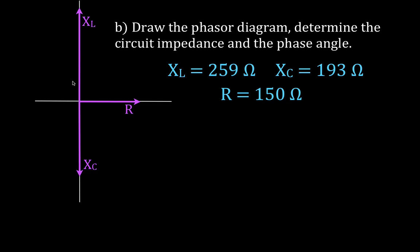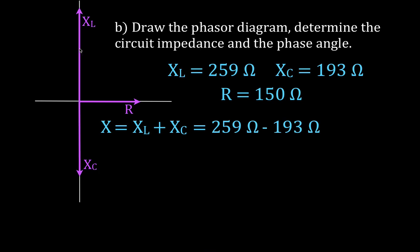To combine the y-axis vectors, we take the difference: XL plus XC, where XL is 259 and XC is negative 193, giving a net reactance X of positive 66 ohms. This positive result means the circuit is more inductive. I represent that combined vector separately, then add it to the resistance vector to get the impedance.